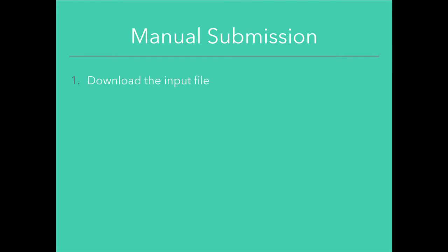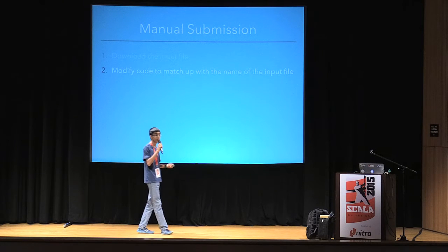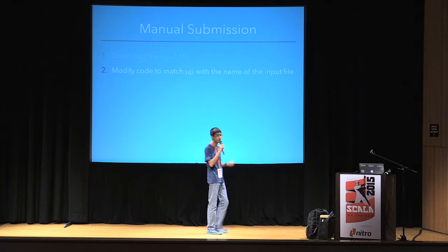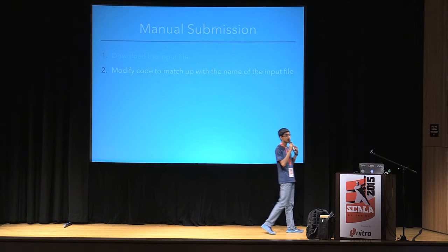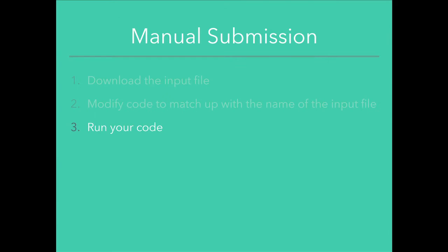Let's go through the manual submission process for Google Code Jam. First, you download your input file, which is randomly generated on Google servers. Then you modify your code to match the name of the input file. Since you're allowed to resubmit multiple times, Google generates a different file name for every input you download, so you have to always make sure you submit the correct input file.